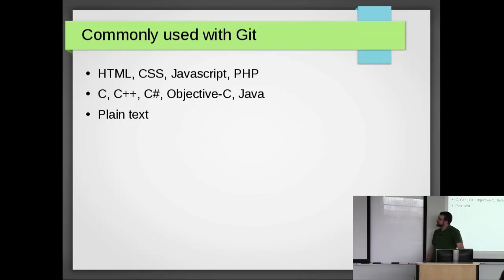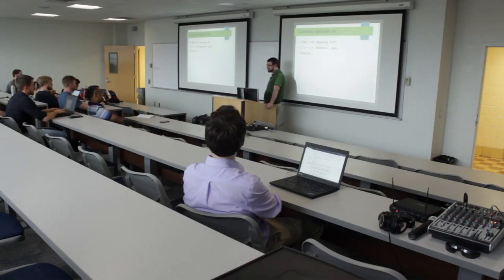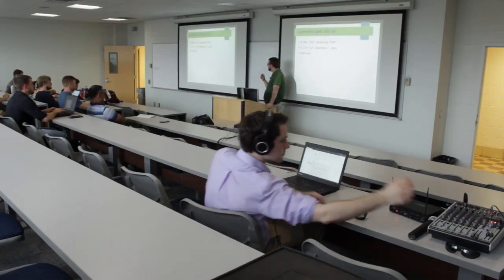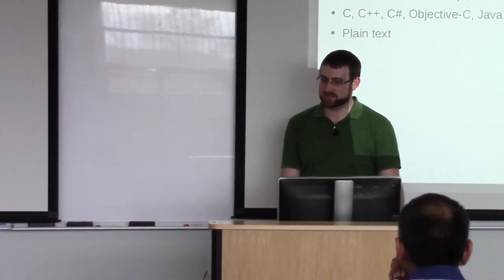Common uses for Git: anything on the web — HTML, CSS, JavaScript, PHP, ColdFusion, Node.js — any kind of web language, definitely use it. Next, compiled languages: C, C++, C#, Objective-C, and Java. You don't track the binaries after compile; you just track the source code. That's a very important distinction. Some companies do track binaries for deploying, but that's a more advanced topic. Or just plain text — configuration files, things on a server. Those are all plain text; you can track all that.